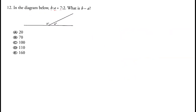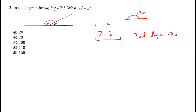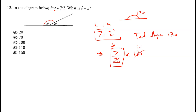In a diagram, b to a is 7 to 2 on a straight line. A straight line has 180 degrees. The total ratio parts are 7 plus 2 equals 9, which represents 180 degrees. Angle b is 7 by 9 times 180, giving 20 times 7 equals 140 degrees. Angle a is 40 degrees. Therefore b minus a equals 140 minus 40, which equals 100.